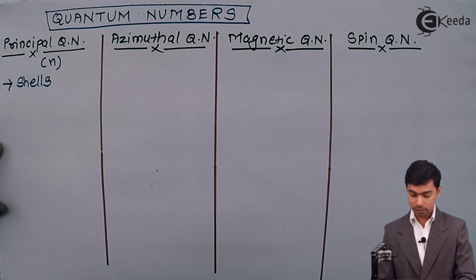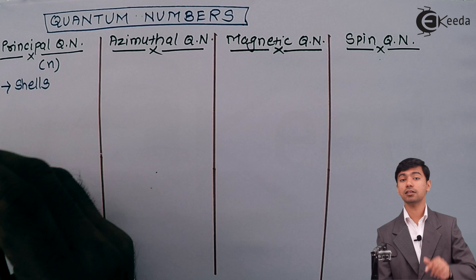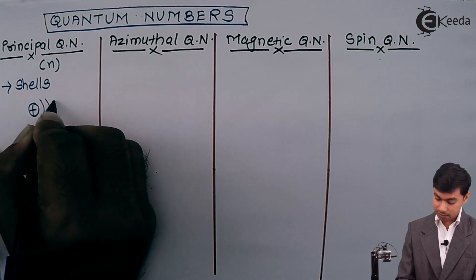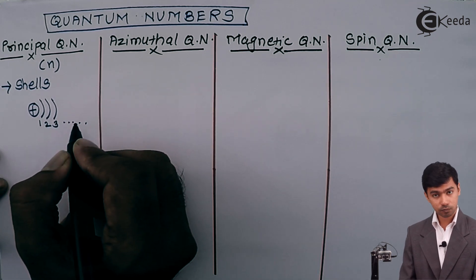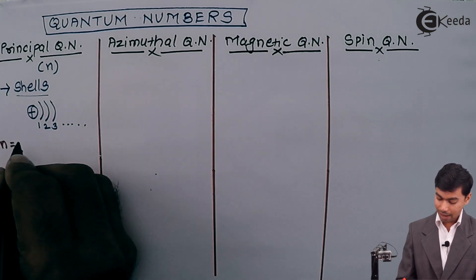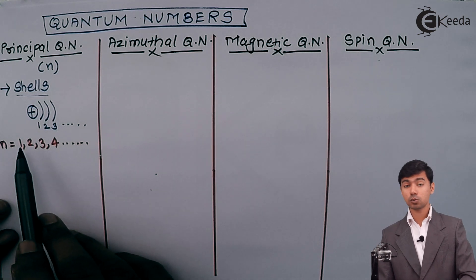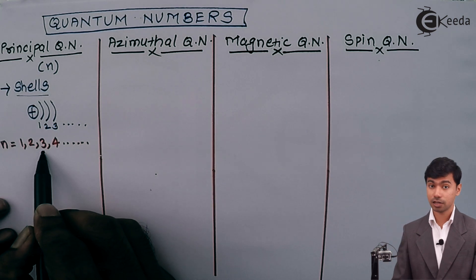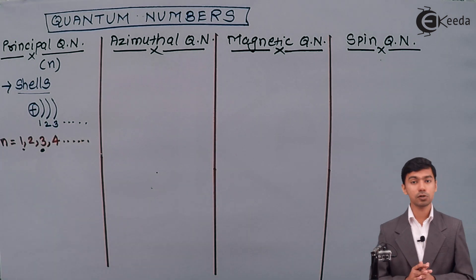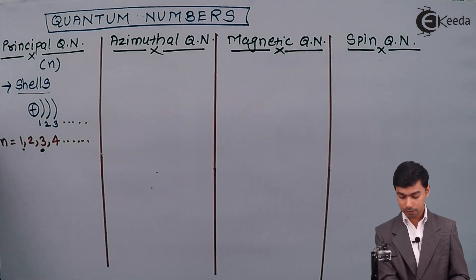The principal quantum number, denoted by small n, gives information about shells. Shells are the circular paths around the nucleus — shell number one, shell number two, shell number three, and so on. So n has values 1, 2, 3, 4, and so on. Whenever the principal quantum number is 1, we are talking about the first shell. The principal quantum number tells us the position of an electron in a shell.